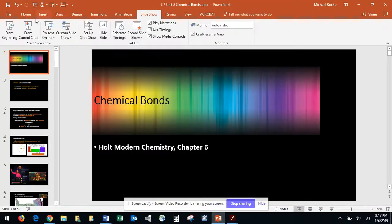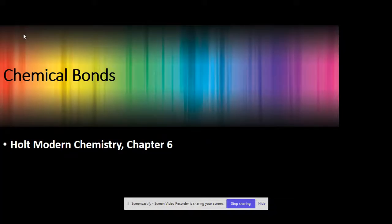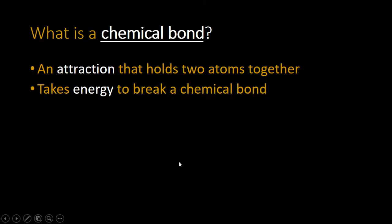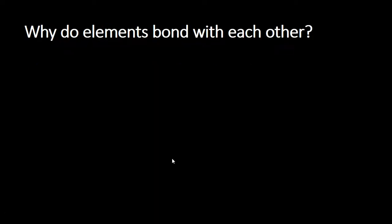Alright, let's do some chemistry. Here's what we learned in the first of the slides. We learned that a chemical bond is an attraction that holds two atoms together and that it takes energy to break a chemical bond. And the two main types of bonds, well first of all, we asked why does this happen?